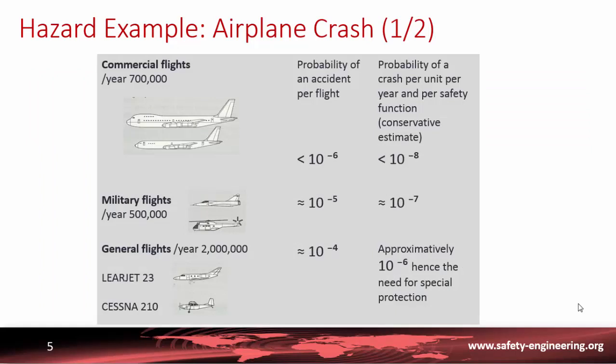We have seen an internal hazard: fire. Now let's look at an external hazard: the plane crash. Through statistics from the aeronautic industry, we can distinguish three kinds of flights. For commercial flights, there are several hundreds of thousands per year, and the probability of accident per flight is on the order of 10^-6. Combined with the probability of the crash reaching a safety function, the result is on the order of 10^-8 per year per safety function, which is sufficiently low to disregard this kind of accident.